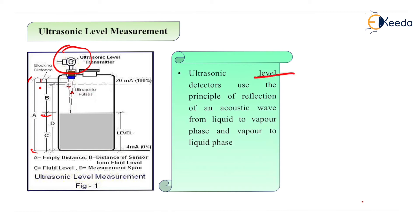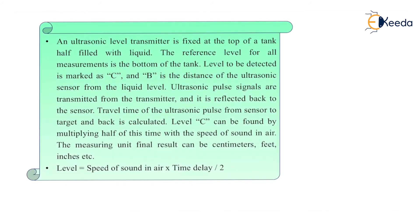Ultrasonic level detectors use the principle of reflection of acoustic waves from the liquid to vapor phase and vapor to the liquid phase. The ultrasonic level transmitter is fixed at the top of the tank, half filled with liquid. The reference level for all measurements is the bottom of the tank. The level to be detected is marked C, and B is the distance of the ultrasonic sensor from the liquid level.